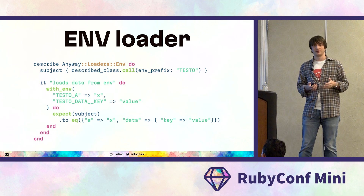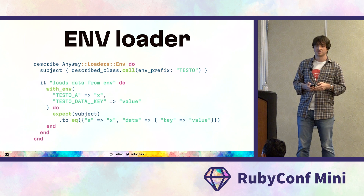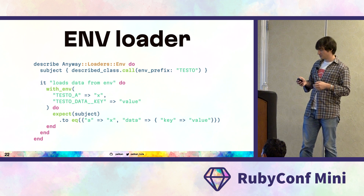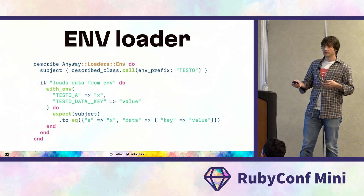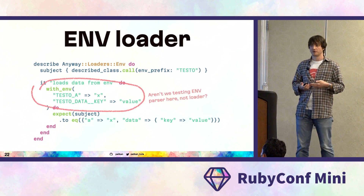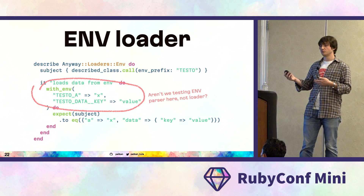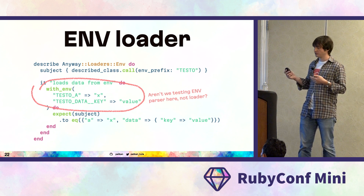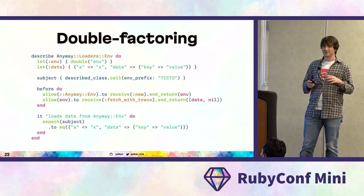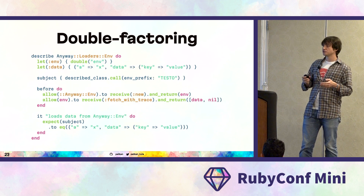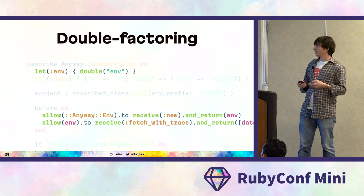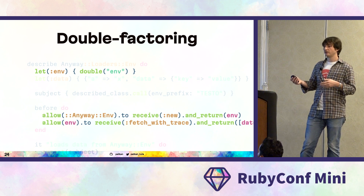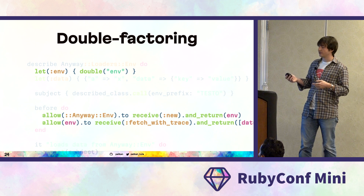I'm more of a classical style tester, to be honest, so my tests looked like this initially. To test the loader class, we set up a whole real env object and use it. But that means we're actually testing the parser more than the loader, because the logic of dealing with the actual env is the responsibility of another component. Let's rewrite it in a bit of mockist style, introducing fake objects to test what the loader should do.